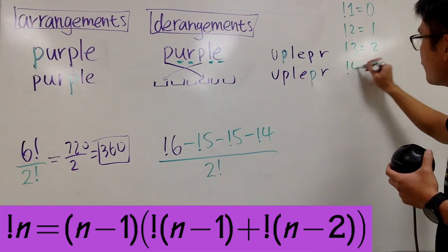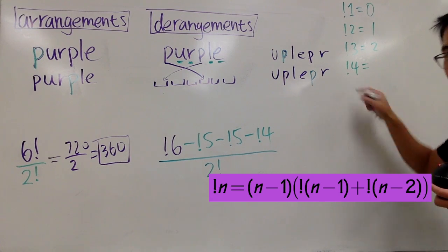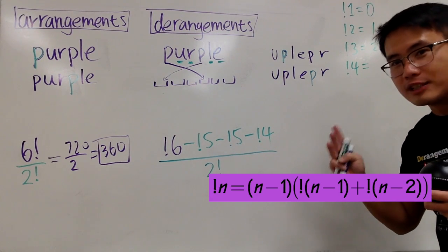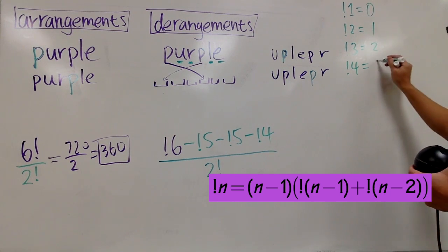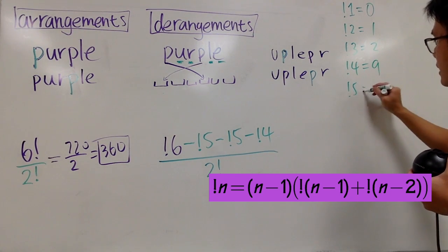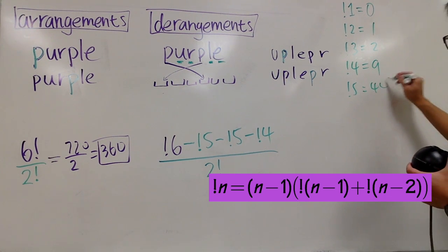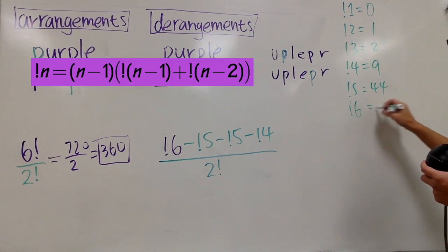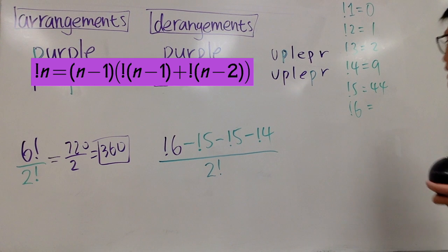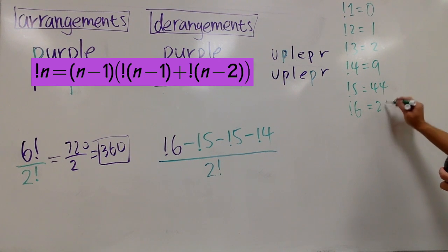Sub-factorial of 4 is 3, because you do 4 minus 1 which is 3, times this plus that which is another 3, so 3 times 3 is 9. Sub-factorial of 5 is 4 times this and that, which is 11, times 4 which is 44. And lastly, sub-factorial of 6 is 5 times this and that, which is 53. 5 times 53 is 265.